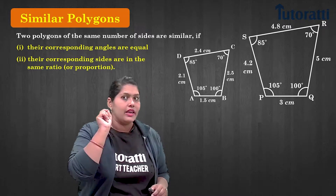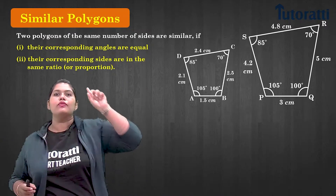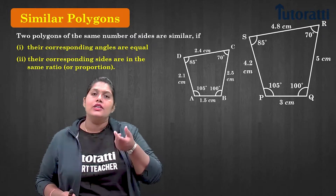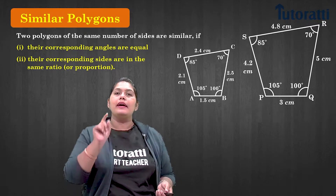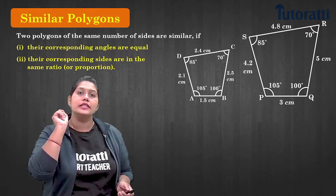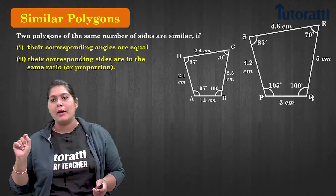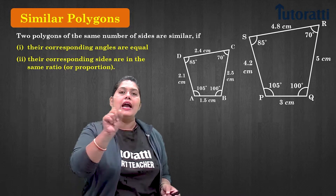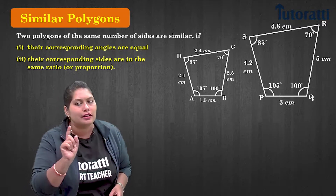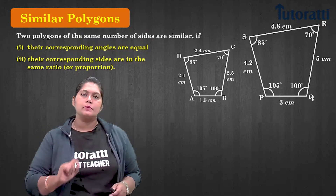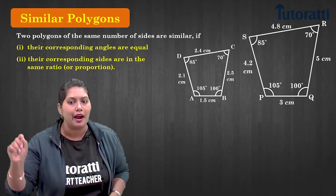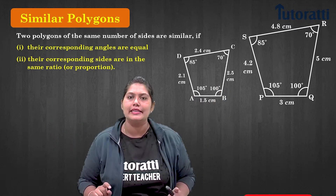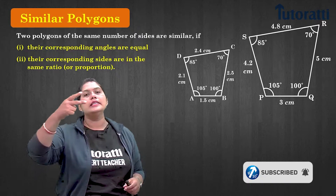To check corresponding angles, observe the name of the polygon: ABCD. Angle A is 105°, so I need to pick the angle from the other quadrilateral with the same measure — that is angle P. So angle A of quadrilateral ABCD corresponds to angle P of quadrilateral PQRS. Similarly, angle B corresponds to angle Q, angle C to angle R, and angle D to angle S. The measurements of all corresponding angles are the same.